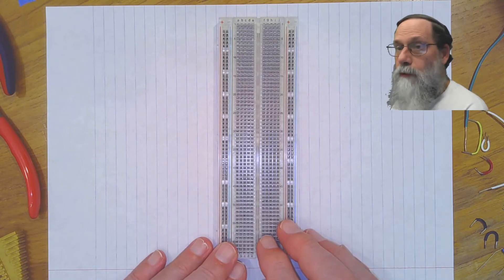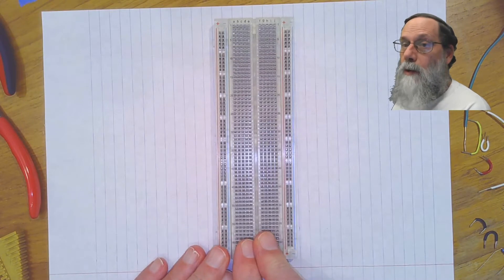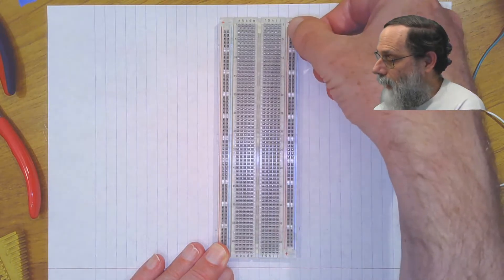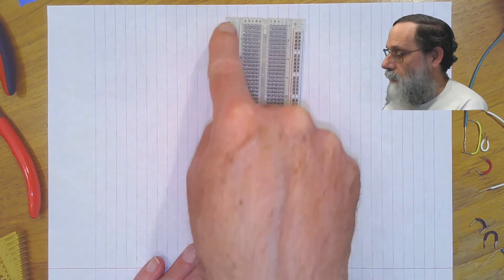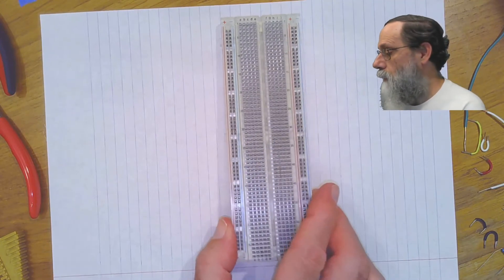There are two different regions of the breadboard, the central region here, which is where we'll do the components and wires for our circuit, and then on the edge, on each side.